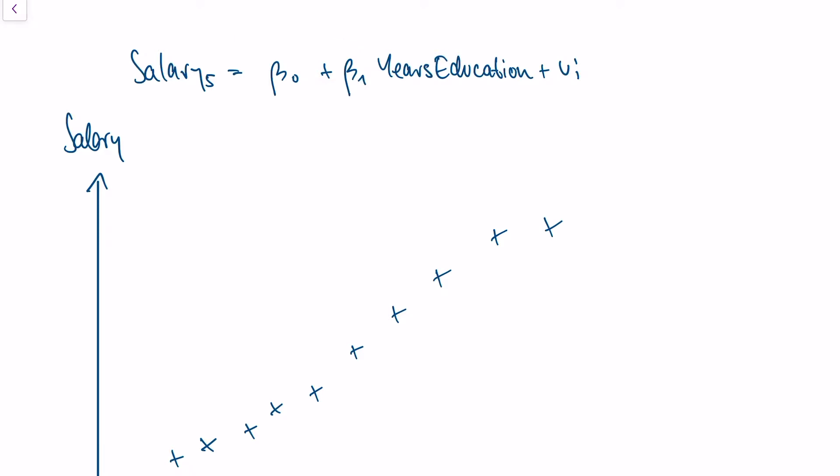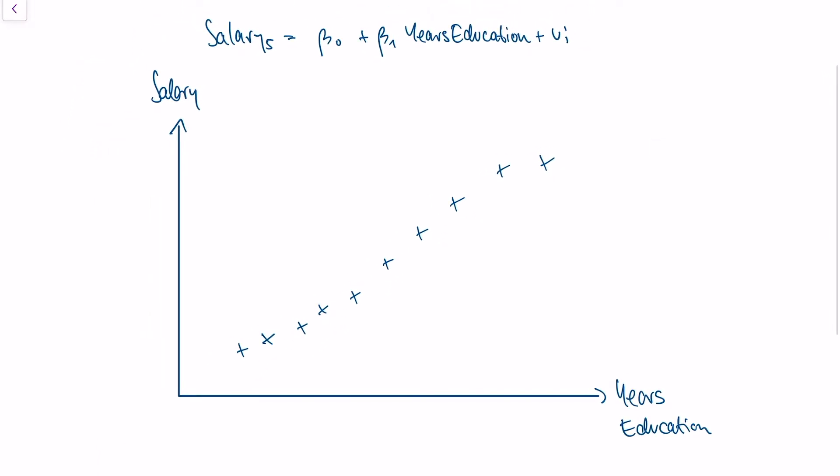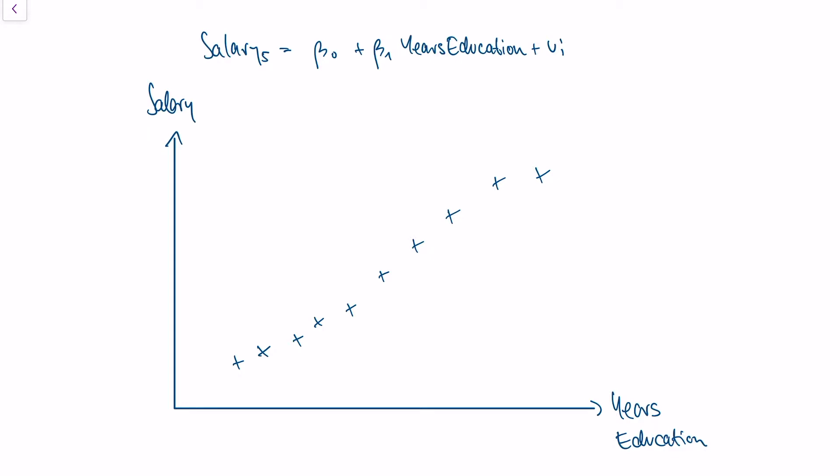And so we collect some data, and this is the data that we get. Here on the x-axis we have the years of education, and on the y-axis we have the salary of the person.